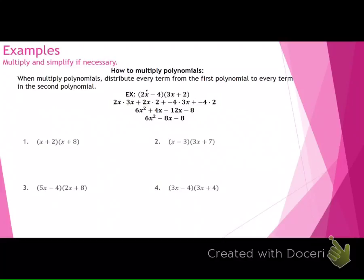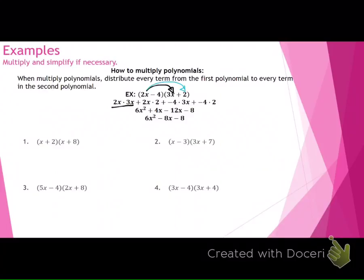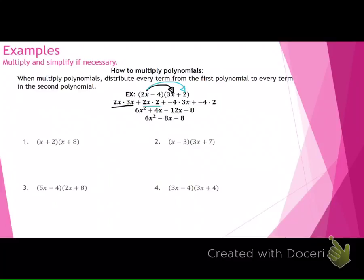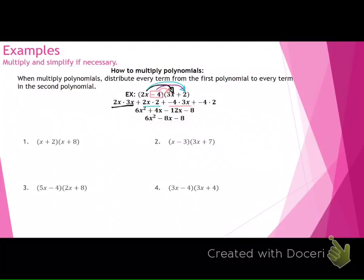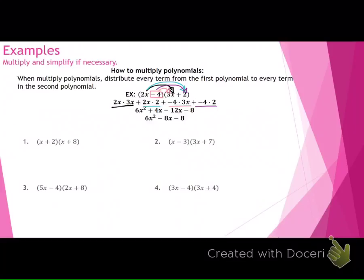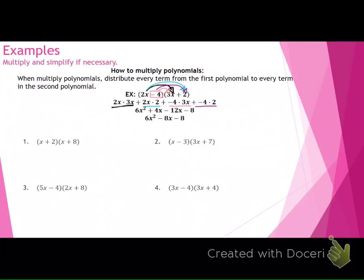Both of them, all the way out. You'll notice here, they did 2x times 3x, and then 2x times 2, so everything from the first goes to everything in the second. So we don't have a monomial anymore. Now they're distributing the negative 4 to the 3x and the negative 4 to the 2.